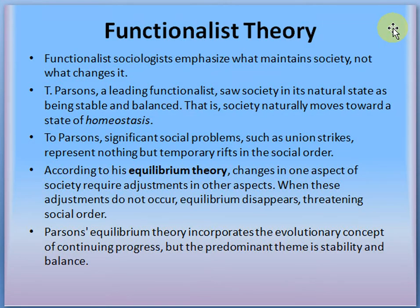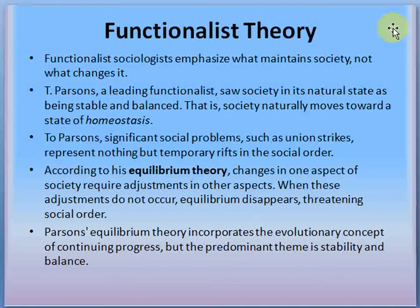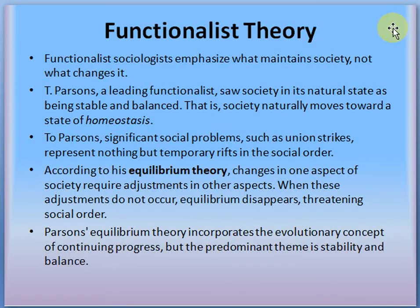Parsons saw significant social problems such as union strikes as representing nothing but temporary rifts in the social order. According to his equilibrium theory, change in one aspect of society requires adjustment in other aspects; when these adjustments do not occur, equilibrium is disrupted, threatening social order. To maintain social order, we need equilibrium and stability. Parsons' equilibrium theory incorporates the evolutionary concept of continuing progress, but the predominant theme is stability and balance in the society.